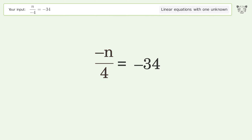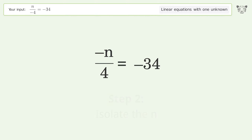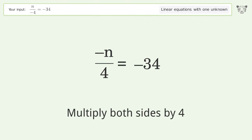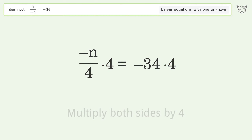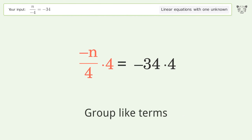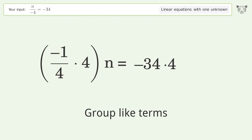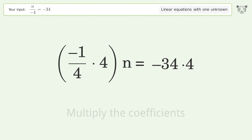Move the negative sign from the denominator to the numerator. To isolate n, multiply both sides by four. Then group like terms.